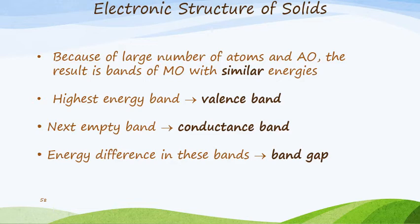Because of the large number of atoms and atomic orbitals, the result is bands of molecular orbitals with similar energies. The highest energy band is called the valence band, the next empty band is called the conduction band, and the energy difference between the valence band and the conduction band is called the band gap.